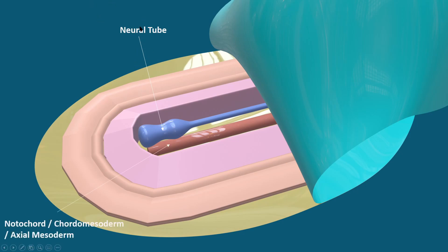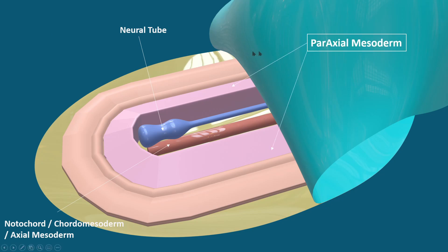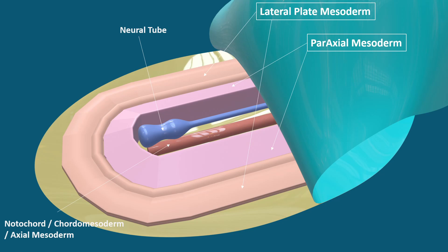The neural tube is not part of intraembryonic mesoderm, but just remember that it is there. Along with that, this is the notochord, which is also called axial mesoderm. Then we have paraxial mesoderm which runs parallel to this axial mesoderm but slightly laterally, and more lateral to paraxial mesoderm the most lateral structure is the lateral plate mesoderm, and in between the paraxial and lateral plate mesoderm is the intermediate mesoderm.